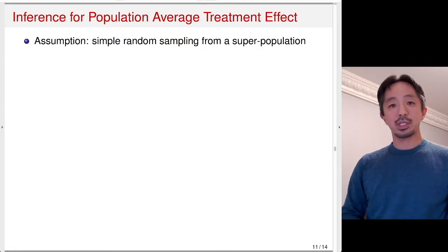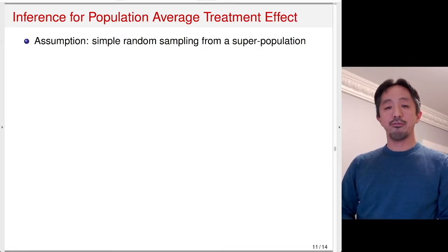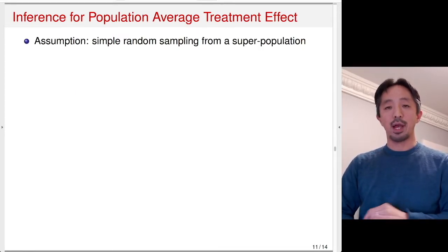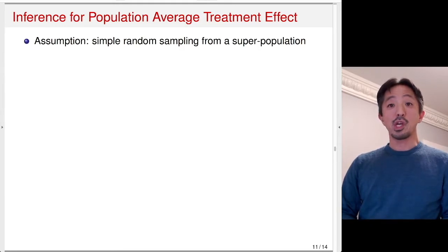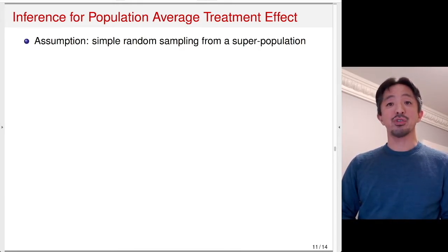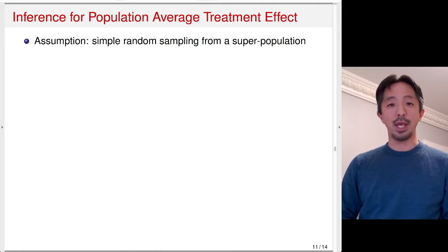So far, we've been discussing inference for the sample average treatment effect, or SATE. Here, we're going to turn our attention to inference for the population average treatment effect, or PATE.